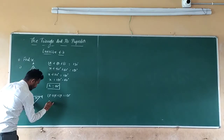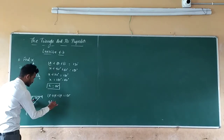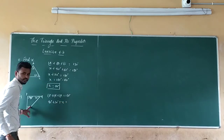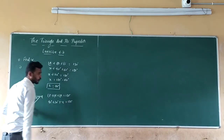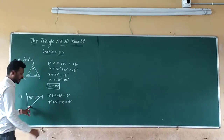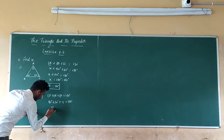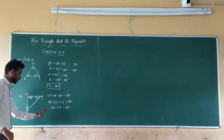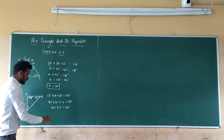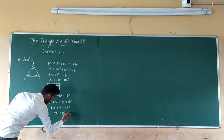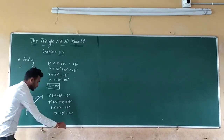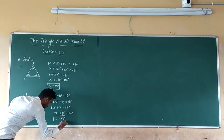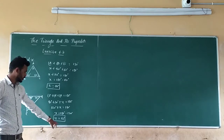P is 90 degrees, plus Q is 30 degrees, plus angle R is X, which is equal to 180 degrees. So we can add these: 90 degrees plus 30 degrees equals 120 degrees. Plus X, which is equal to 180 degrees. Now take 120 degrees to the RHS — that will become subtraction. So X is equal to 180 degrees minus 120 degrees, which is 60 degrees. The answer of the second question is X equals 60 degrees.